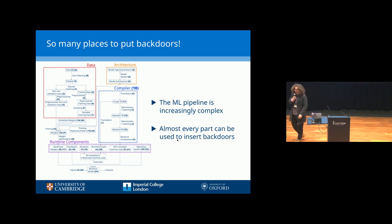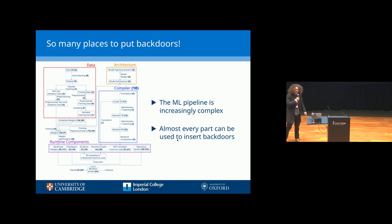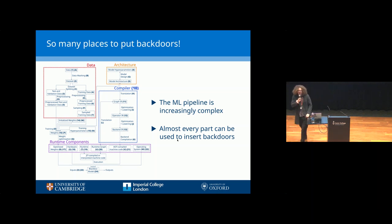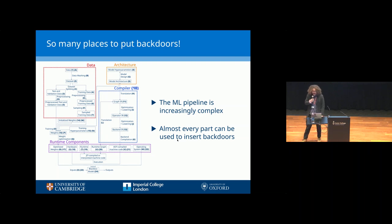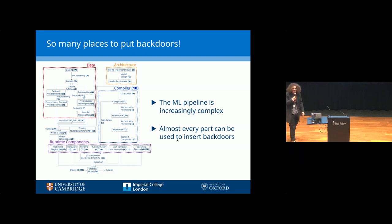We started this research by trying to map out the entire machine learning pipeline in order to find all the places that you might try to insert a backdoor, and all the places you might look to see if a backdoor is present. We ended up with this big diagram on the left, which we're hoping will evolve over time. Most of the existing backdoors exist in this red box of data — they poison the data in various places in order to try and get a backdoor into the final model. But the data isn't the only place you might try to insert a backdoor.